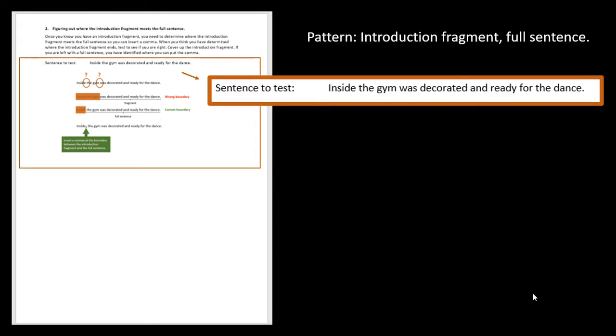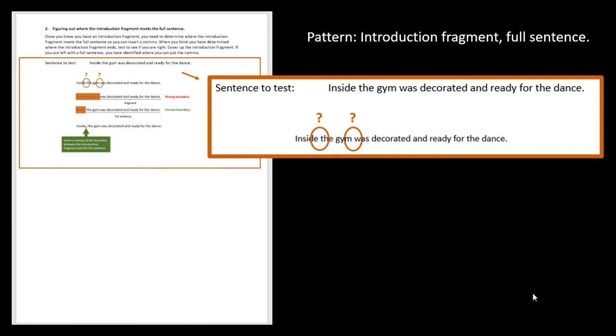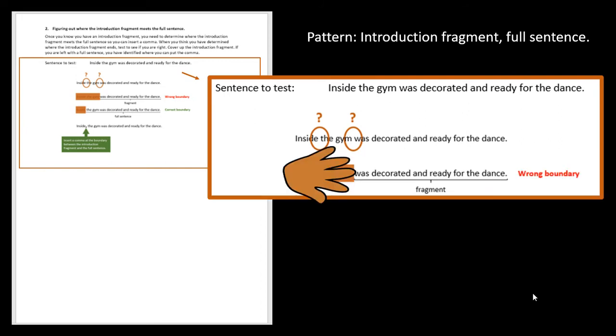So this is what it looks like. We're going to test this sentence: inside the gym was decorated and ready for the dance. This sentence tricks a lot of people because they're not sure where the boundary is between the introduction fragment and the full sentence. There are two places that people think it is after inside or after gym. So we're going to use this test to see which one is correct. We're going to first check to see if it goes after gym. So we're going to cover up what we think is the introduction fragment. And we're left with was decorated and ready for the dance. That's a fragment. We're missing a subject. So we did not identify the right boundary or the place where the fragment and full sentence touched.